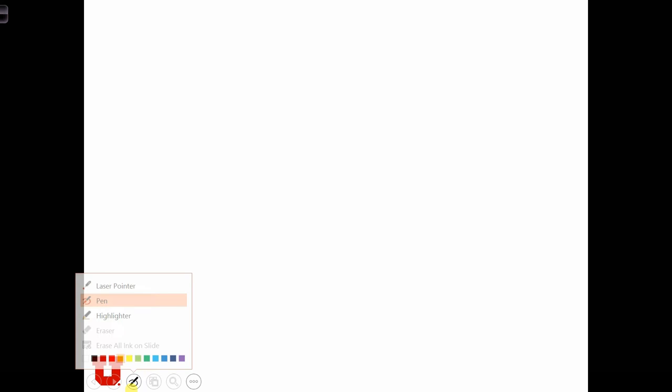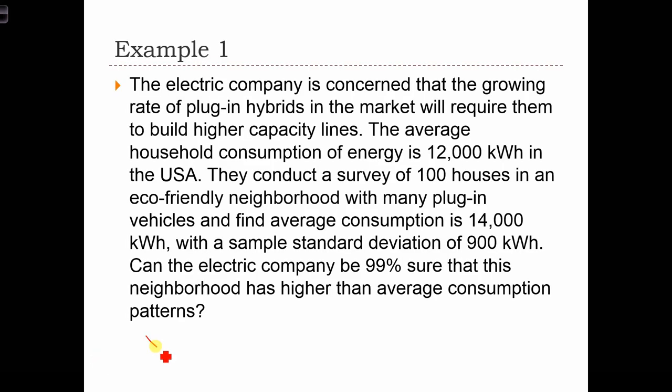Let's start by writing down what we know. We know that X-bar, the consumption in the eco-friendly neighborhood, was actually 14,000 kWh with a standard deviation of 900 and a sample size of 100. They want to be 99% sure, so we'll set alpha to 1 minus 99%, which is 0.01 or 1%.